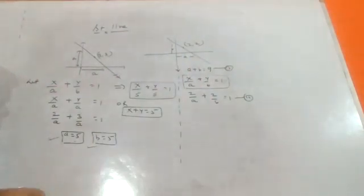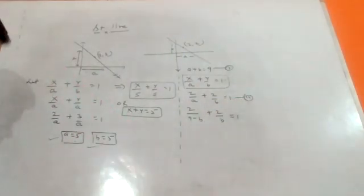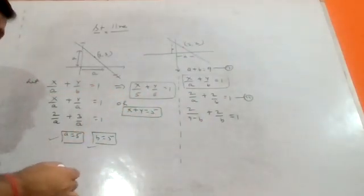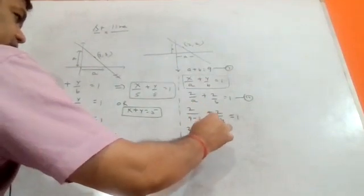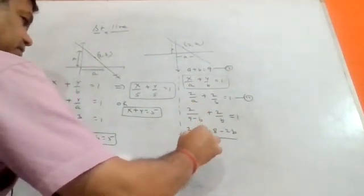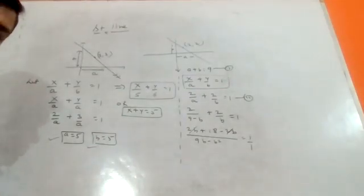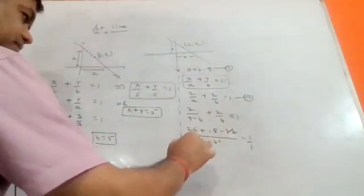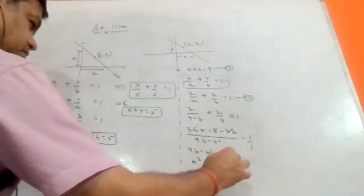We have two equations: the intercept form with point two comma two substituted gives the first equation, and a plus b equals nine is the second. Substituting a equals nine minus b, we get 2 upon (9 minus b) plus 2 upon b equal to one. Cross multiplying gives 9b minus b squared equals 18, which rearranges to b squared minus 9b plus 18 equals zero.